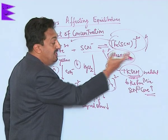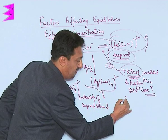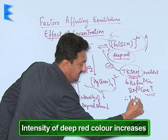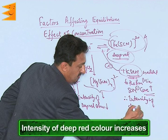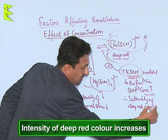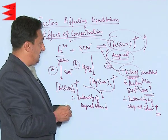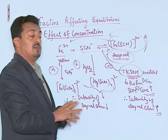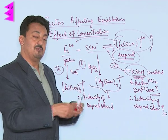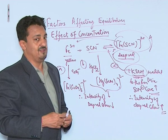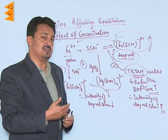Since the concentration of the ferric thiocyanate complex increases, the intensity of the deep red color gets much higher. This is the best example to show how concentrations can be manipulated, and by manipulating the concentration, the equilibrium can be shifted in either direction — demonstrating how equilibrium behaves when the concentration of reactants or products is changed.